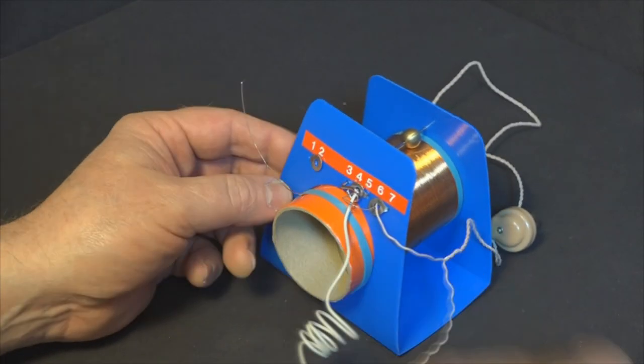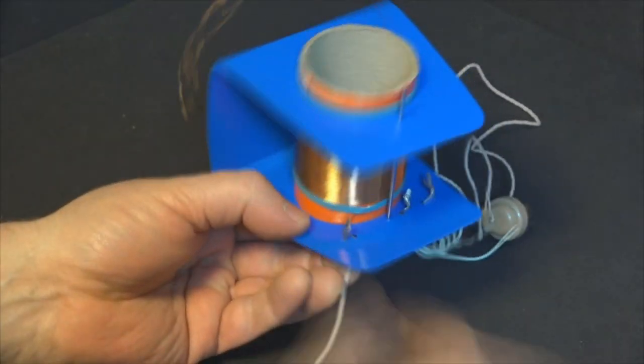One end of the tuner coil is simply dead-ended, and the other is tied into the earphone wire and the ground circuit.